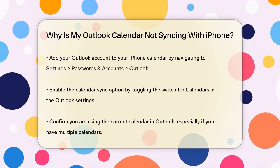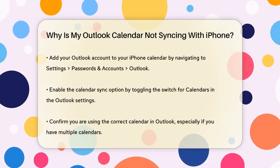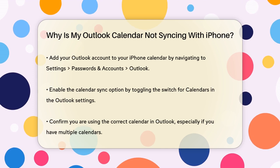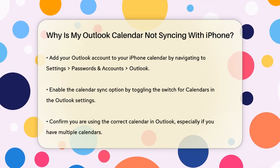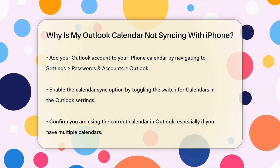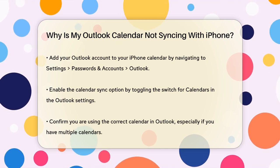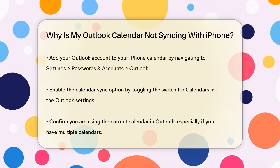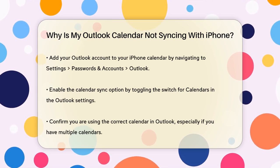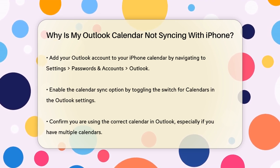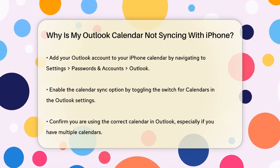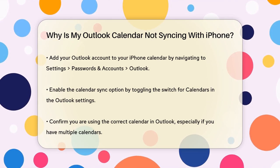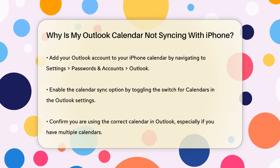Now let's look at your iPhone settings. You need to add your Outlook account to your iPhone calendar and make sure the Calendar Sync option is enabled. Go to Settings, Passwords and Accounts, Outlook, and toggle on the switch for Calendars. This will allow your iPhone calendar to sync with your Outlook calendar.